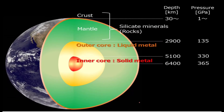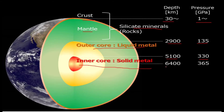Here is a summary of the Earth's layers: The crust has a depth of 30 kilometers and pressure of 1 gigapascal. The mantle is a silica material with a depth of 2,900 kilometers and pressure of 135 gigapascals. The outer core is liquid metal at 5,100 kilometers depth with 330 gigapascals pressure. The inner core is solid metal at 6,400 kilometers depth with 365 gigapascals pressure.